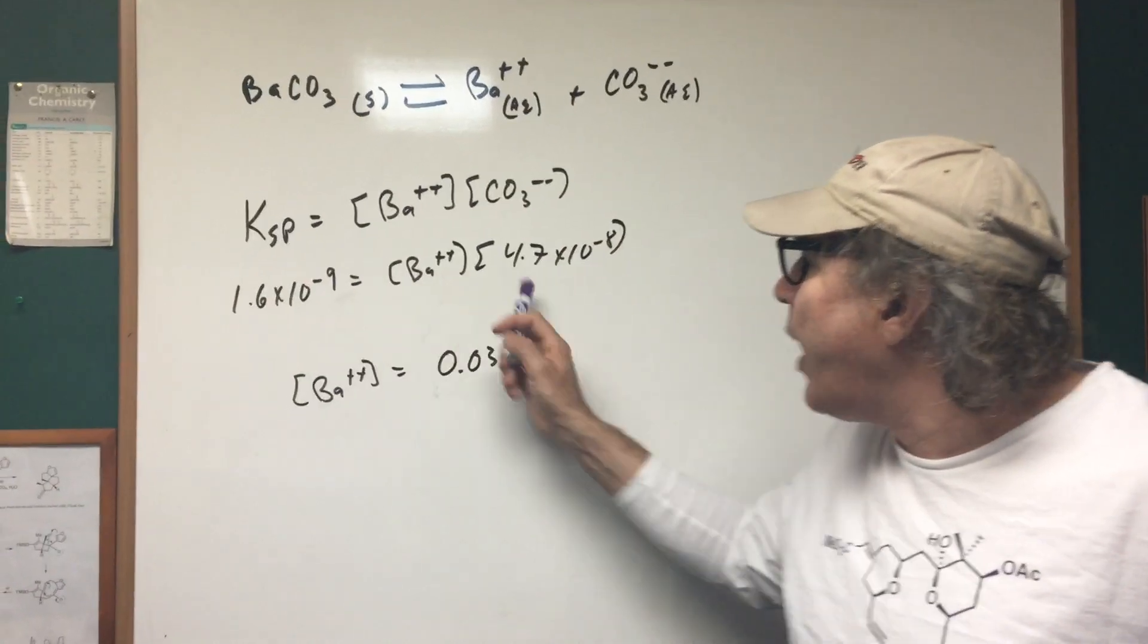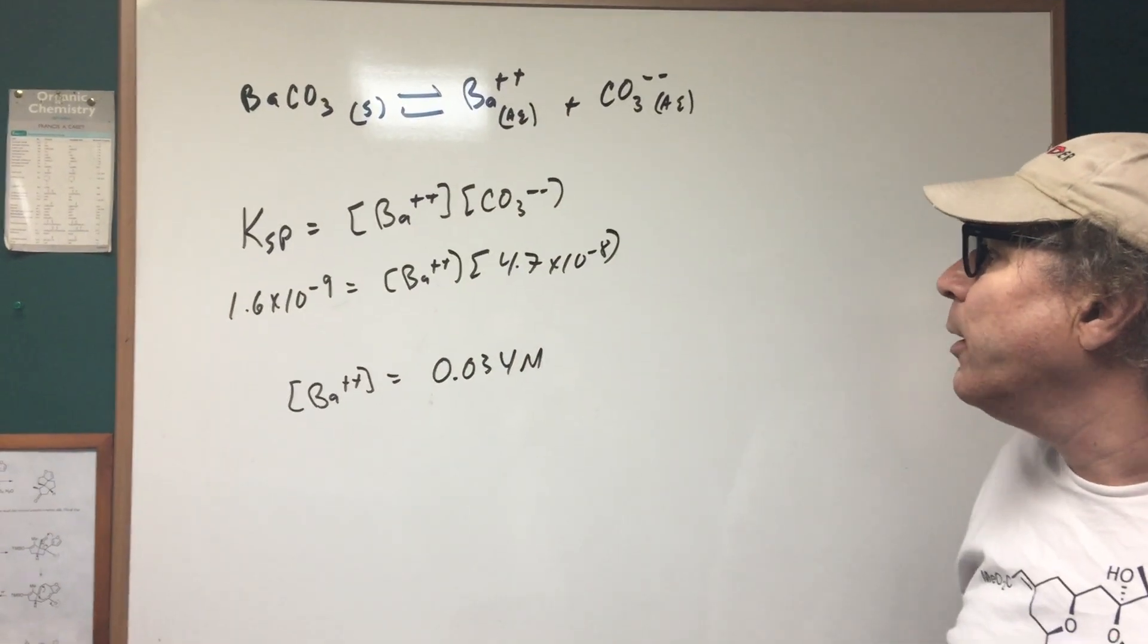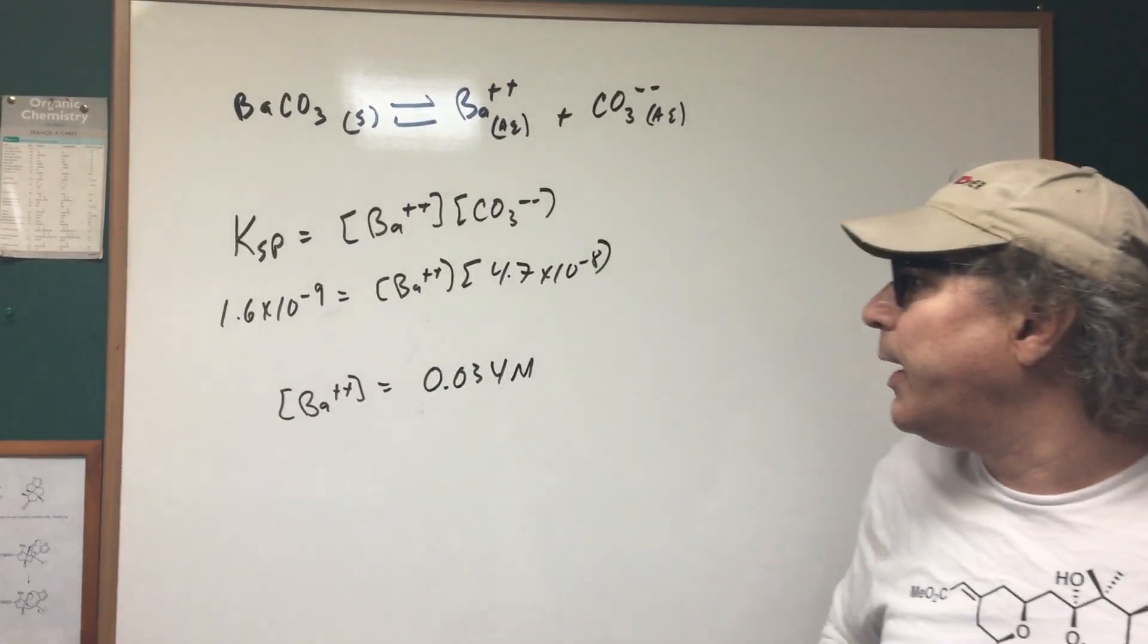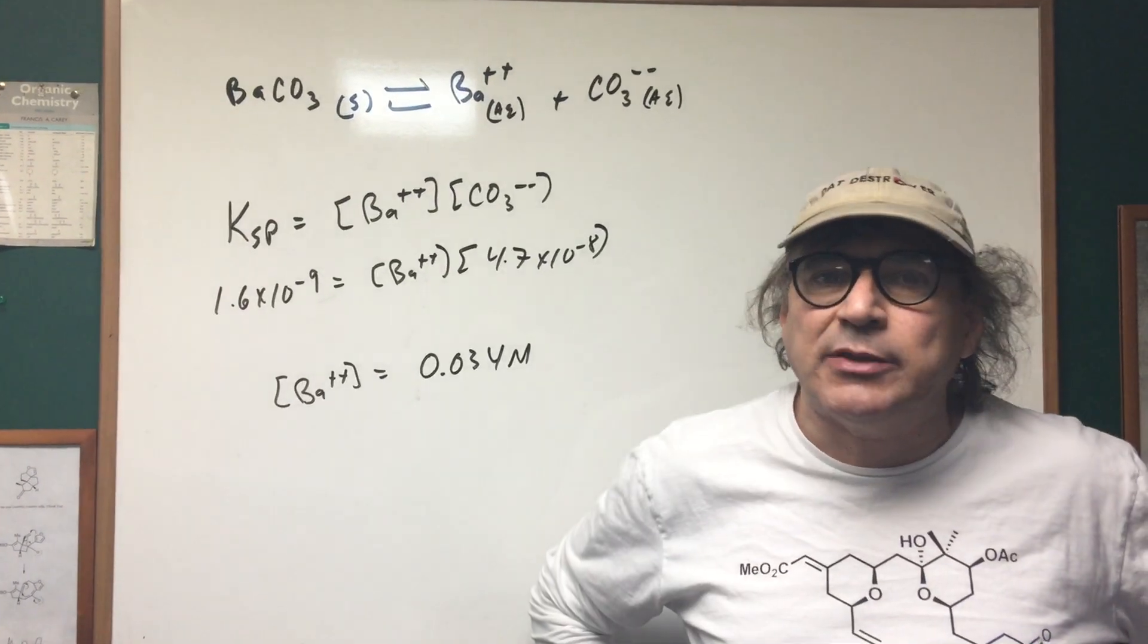And when you divide, you get 0.034 molar. So this would be the amount of barium that remains in the solution.